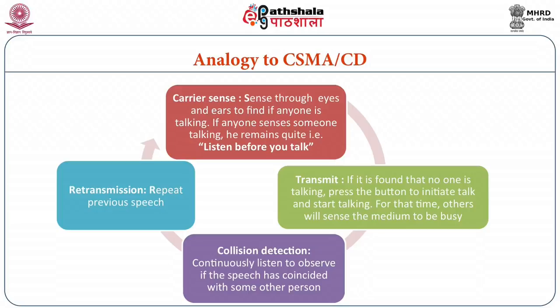In a round table conference, there is a special mechanism where a button is provided in front of each speaker. When any person wants to speak, it presses the button, the light gets highlighted, and the other people know that this person is speaking, so they wait for their turn. The users continuously listen to the medium to sense if it is free, and if found to be free, the person talks. At the time of talking, it also continues to listen for any collisions. If it observes that the speech has coincided with another person's speech, it stops and then repeats its previous speech.